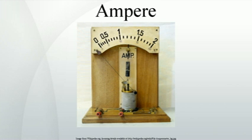The ampere was originally defined as one-tenth of the CGS system electromagnetic unit of current, now known as the abampere — the amount of current that generates a force of two dynes per centimetre of length between two wires one centimetre apart. The size of the unit was chosen so that the units derived from it in the MKSA system would be conveniently sized.